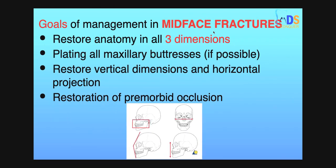What are the goals in the management of mid-face fracture? To restore the anatomy in all three dimensions — horizontal, vertical, and anterior-posterior. Plating of all the maxillary buttresses if possible. Restore the vertical dimension and horizontal projection. And restoration of pre-morbid occlusion. There are four goals to remember: restoring the three dimensions of the face, plating of all maxillary buttresses if possible, restoration of vertical dimension and horizontal projection, and restoration of pre-morbid occlusion.